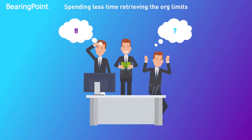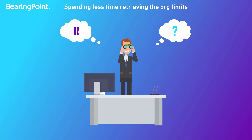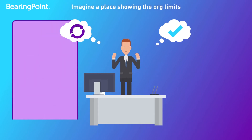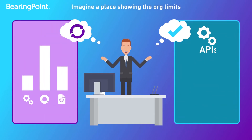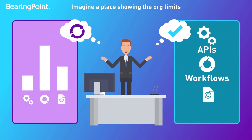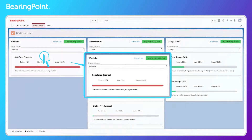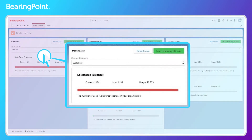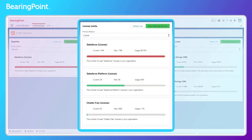Your goal is to spend less time retrieving the org limits from different places, reports, and logs? Imagine a place showing all the limits like APIs, workflows, licenses? With BearingPoint's Limits Monitor, this is now a reality.